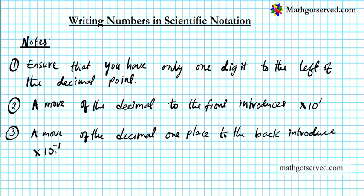Ten to the negative one is the same thing as multiplying by one over ten, which is the same as dividing by ten. So when you move the decimal point one place to the back, you multiply the number by ten; to neutralize that, you introduce times ten to the negative one. And when you move it to the front, you divide by ten, so to neutralize that division you multiply by ten.